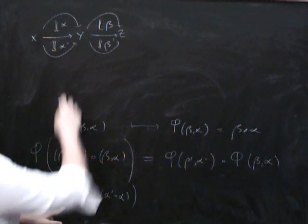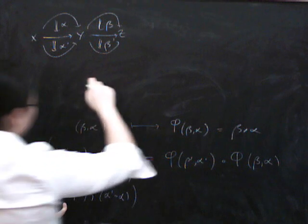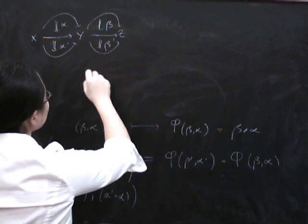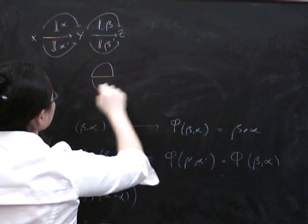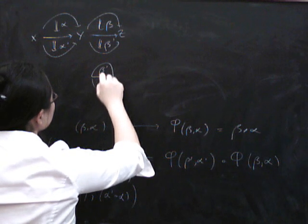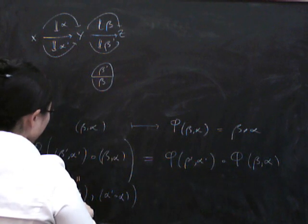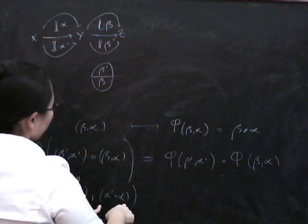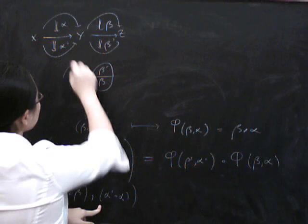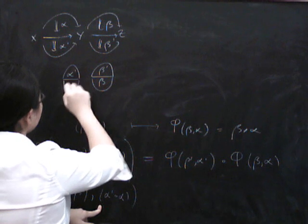On the one hand, we've got beta prime composed with beta, which is this vertical composite. And we've got this vertical composite, alpha prime composed with alpha.